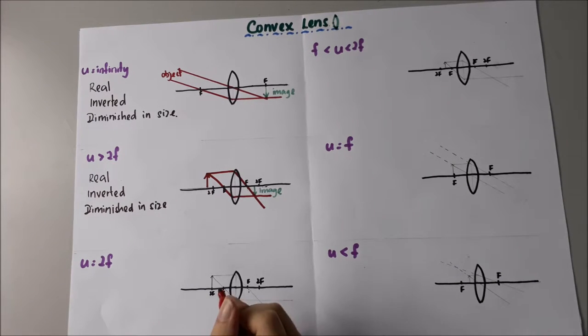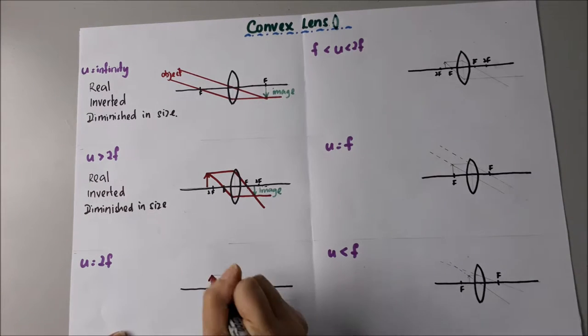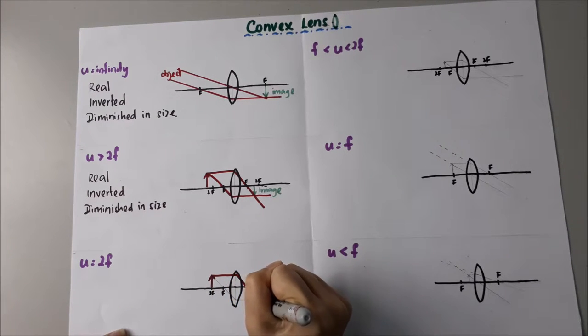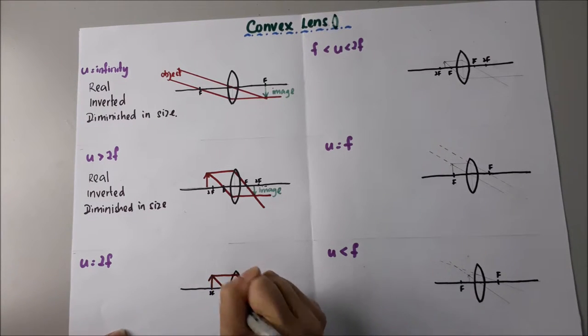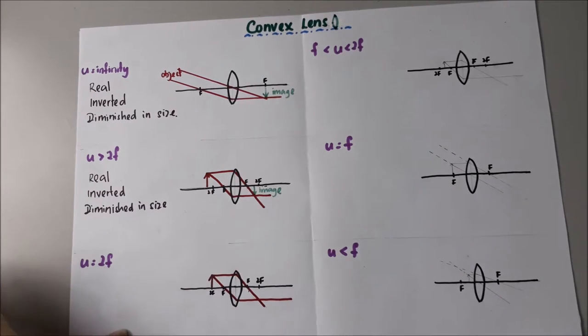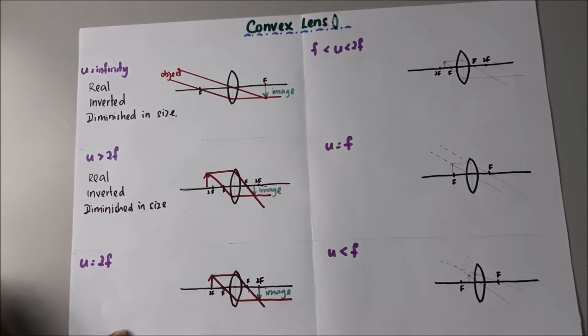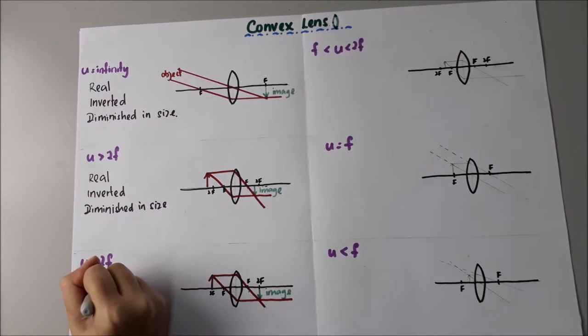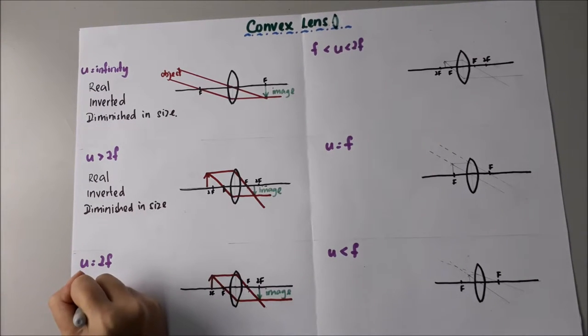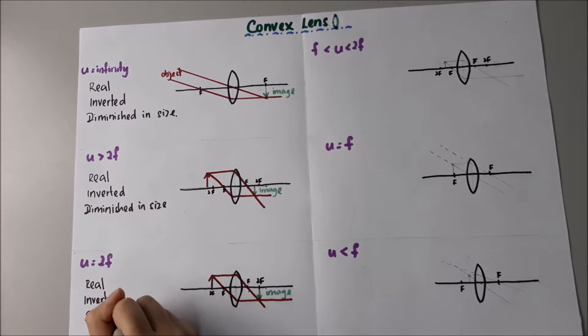When the object is equal to 2F, the image is formed here. From this, we can see that the image is real, inverted, and same size as the object. Because the object is at 2F and the image is also at 2F.